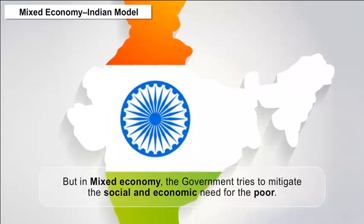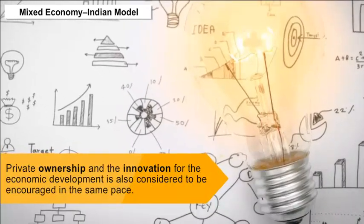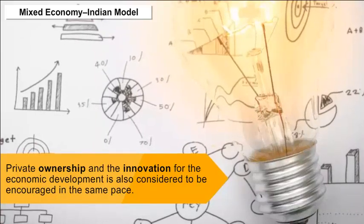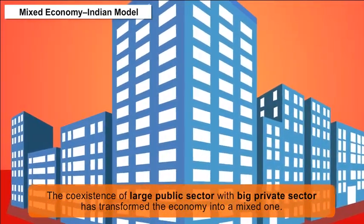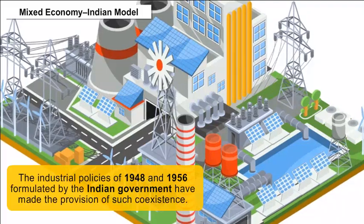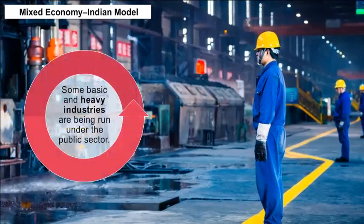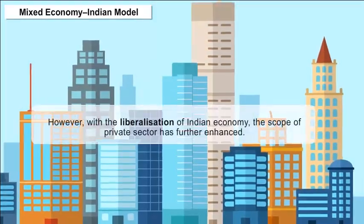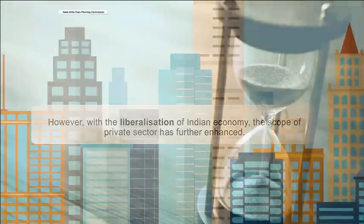In a mixed economy — the Indian model — the government tries to mitigate the social and economic needs of the poor, while private ownership and innovation for economic development are also encouraged. The co-existence of a large public sector with a big private sector transformed the economy into a mixed one. The industrial policies of 1948 and 1956 formulated by the Indian government provided for such co-existence, with some basic and heavy industries run under the public sector.